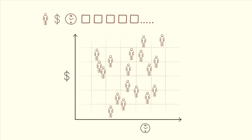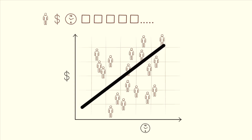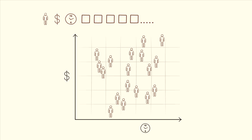We want to understand the average trajectory for all of these managers — the overall relationship between time spent with the company and salary. We find this trajectory by doing a regression, putting all the data into a statistical model and producing a line that shows the typical trend across time and salary. We can then see how far above or below the line each person is, which tells us about the pay equity gap for these individuals. However, this line doesn't yet account for social identities.